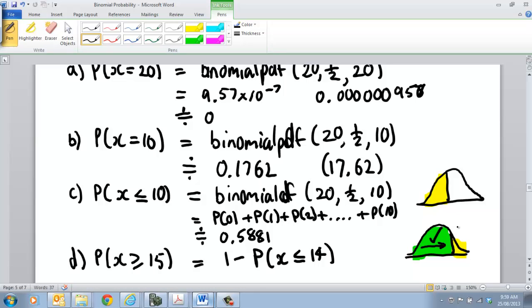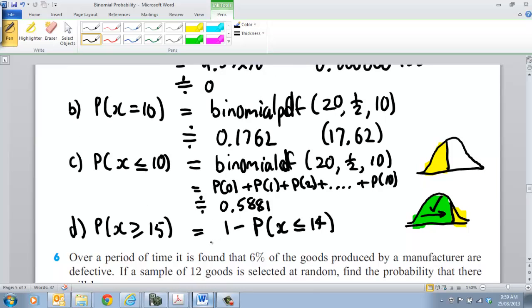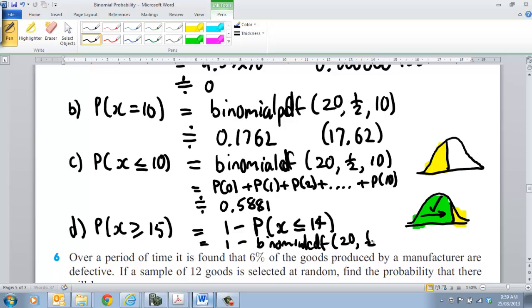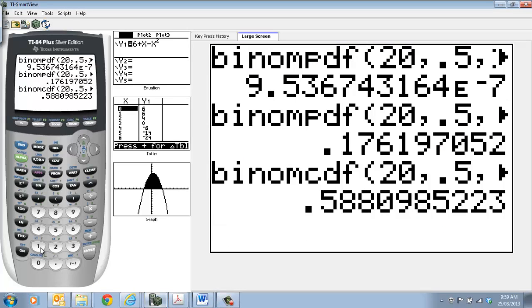So we have to work out this one here because we can't do that on our calculator, because it only works left to right. So that's the easy thing for you to do. In terms of, I've run out of space. So what that will be is one take the binomial CDF of 20, a half, and 14.